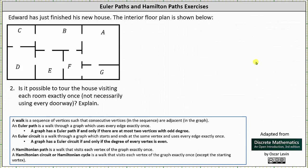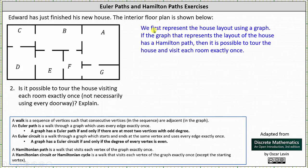We can answer this question by first representing the floor plan or layout of the house using a graph — place a vertex in each room and then connect the vertices with an edge if the rooms are adjacent and share a doorway. If the graph that represents the layout of the house has a Hamilton path, then it is possible to tour the house and visit each room exactly once.